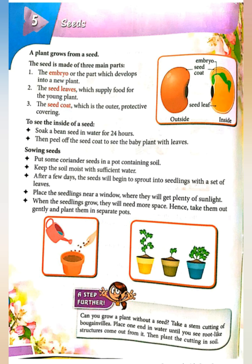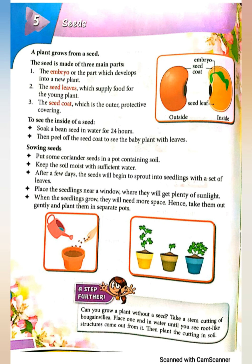Children, you can do an activity at home: Sowing Seeds. Put some coriander seeds in a pot containing soil. Keep the soil moist with sufficient water. After a few days, the seeds will begin to sprout into seedlings with a set of leaves. When the seedlings grow, they will need more space. Take them out gently and plant them in separate pots. Now children, try it at home.